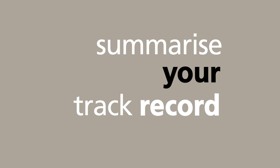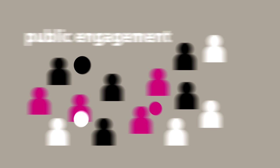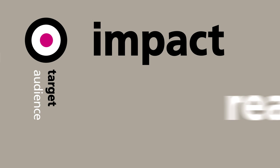We'll then consider the public engagement outcomes of your activity. This section is about you telling us who the activity is aimed at, how it's likely to impact on them, and how you intend to go about reaching them. You can estimate numbers based on what you think you can achieve and then tell us how you aim to go about doing that.